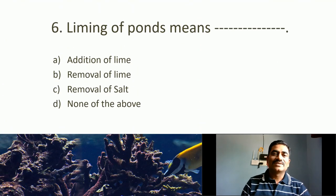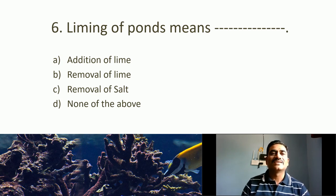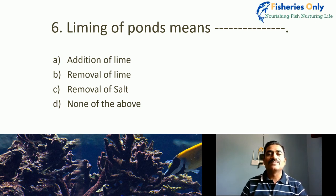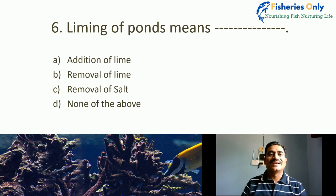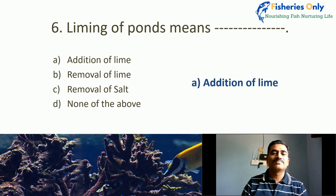Sixth MCQ: Liming of pond means? Options: addition of lime, removal of lime, removal of salt, none of the above. Liming is nothing but the addition of lime to the pond in order to increase the pH, stabilize the pH, disinfect the pond, or to induce molting in prawns. The correct answer is addition of lime.